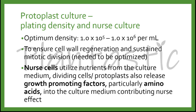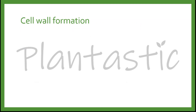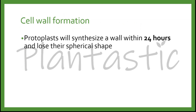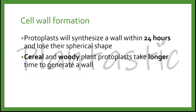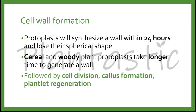For cell wall formation, the protoplasts will synthesize a wall within 24 hours and lose their spherical shape. However, for cereal and woody plant protoplasts, it might take longer to generate a cell wall. After that, it is followed by cell division, callus formation, and plantlet regeneration.